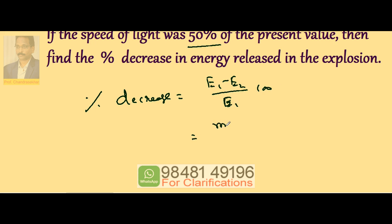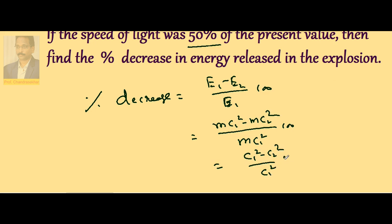This is m c1 square minus m c2 square by m c1 square into 100. Automatically m gets cancelled: c1 square minus c2 square by c1 square into 100.